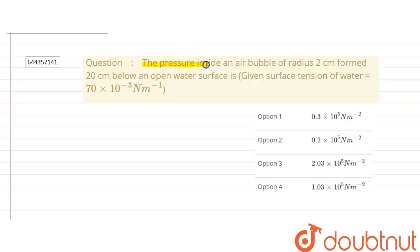Hello, the question says the pressure inside an air bubble of radius 2 centimeter formed 20 centimeter below an open water surface. Given surface tension of water is 70 times 10 to the power minus 3 newton per meter.